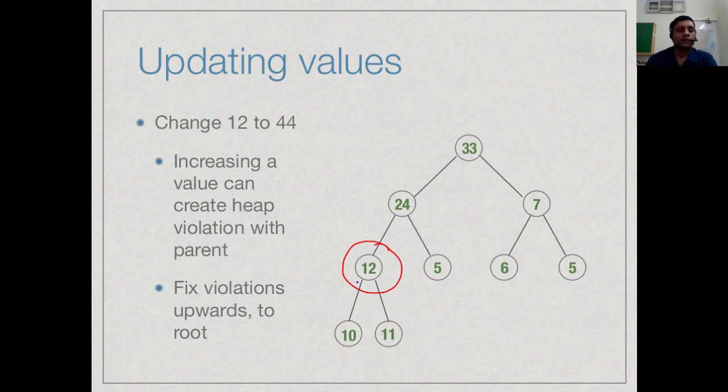then with respect to its children it cannot get any smaller. If 12 is bigger than 10 and 11 any larger value will also be bigger than 10 and 11. We make it 44 we do not have to look down. But because we made it bigger it can become bigger than its parent and in fact, it does happen. If we replace 12 by 44 then we find that there is a heap violation above.